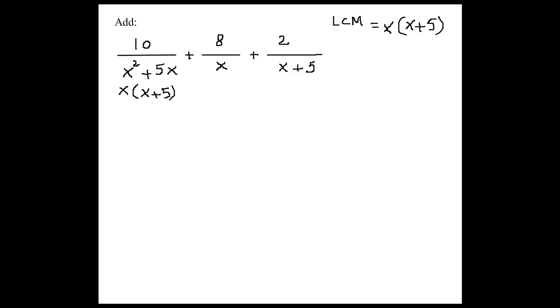So once we find that, we want to make all these 3 fractions to have the same LCD. So the first one, it's already there, is x times x plus 5. Now, what do we need to multiply the second fraction with in order to have the same LCM? Anyone with the microphone you want to tell me? Well, you have to multiply the second fraction with?